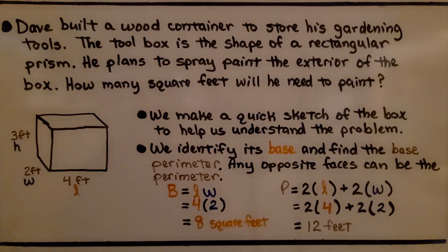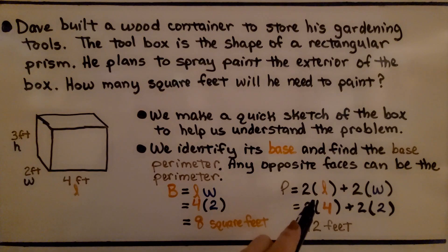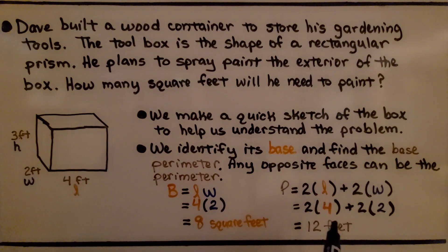The perimeter of the base would be 4, and then in the back there would be 4. That's 2 times the length, 2 times 4. And we would have this 2 feet, and on this side there would be 2 feet. That would be 2 times the width, 2 times 2. So 2 times 4 is 8, plus 2 times 2 is 4, giving us 12 feet for the perimeter of the base.